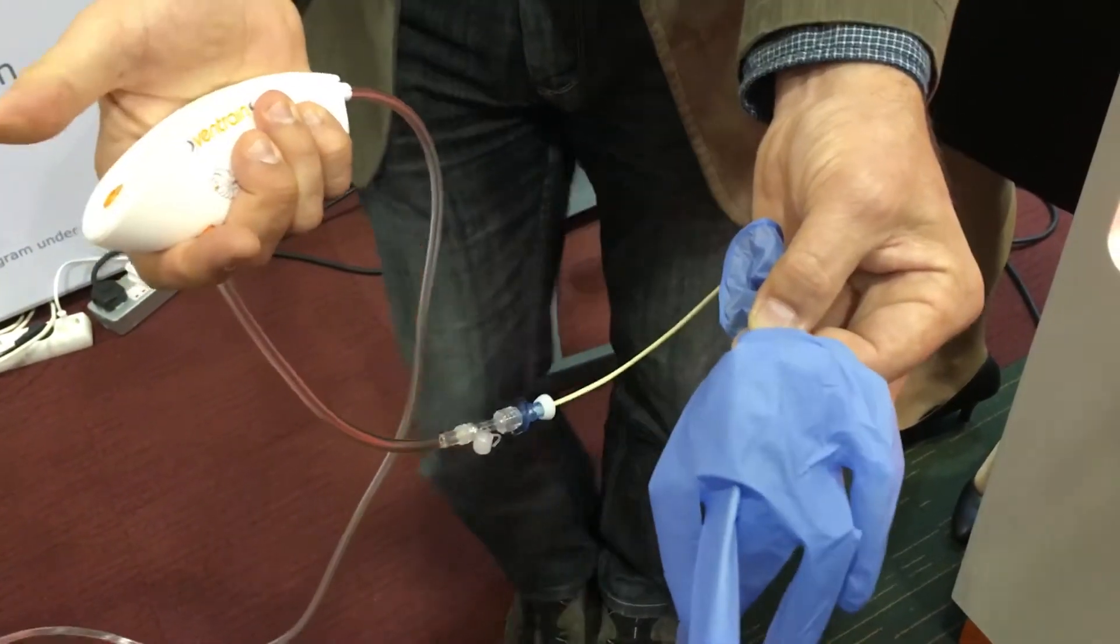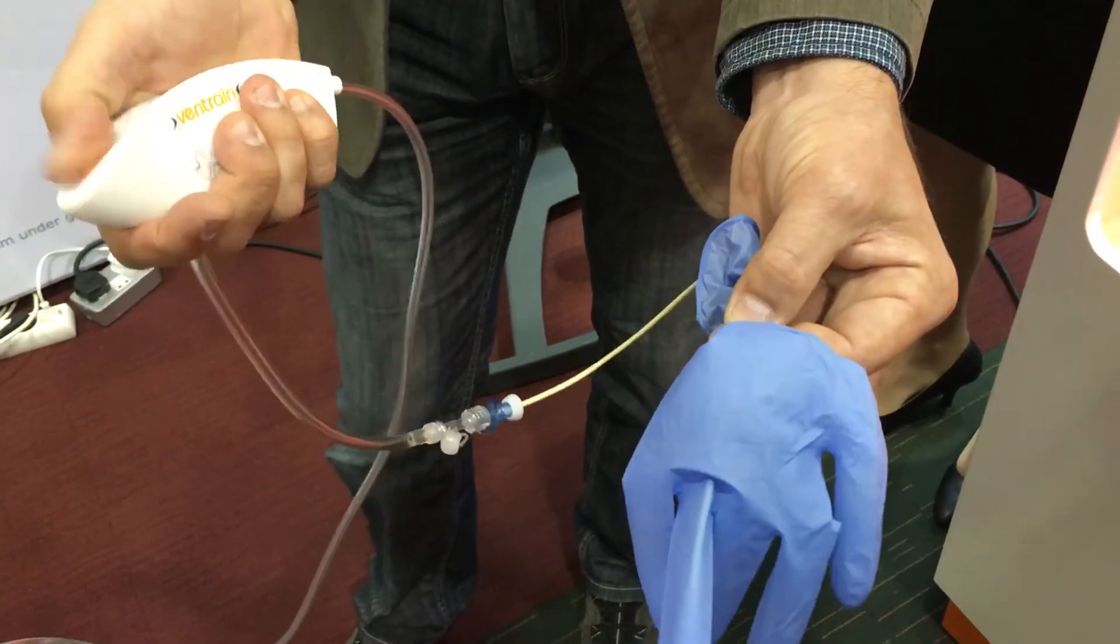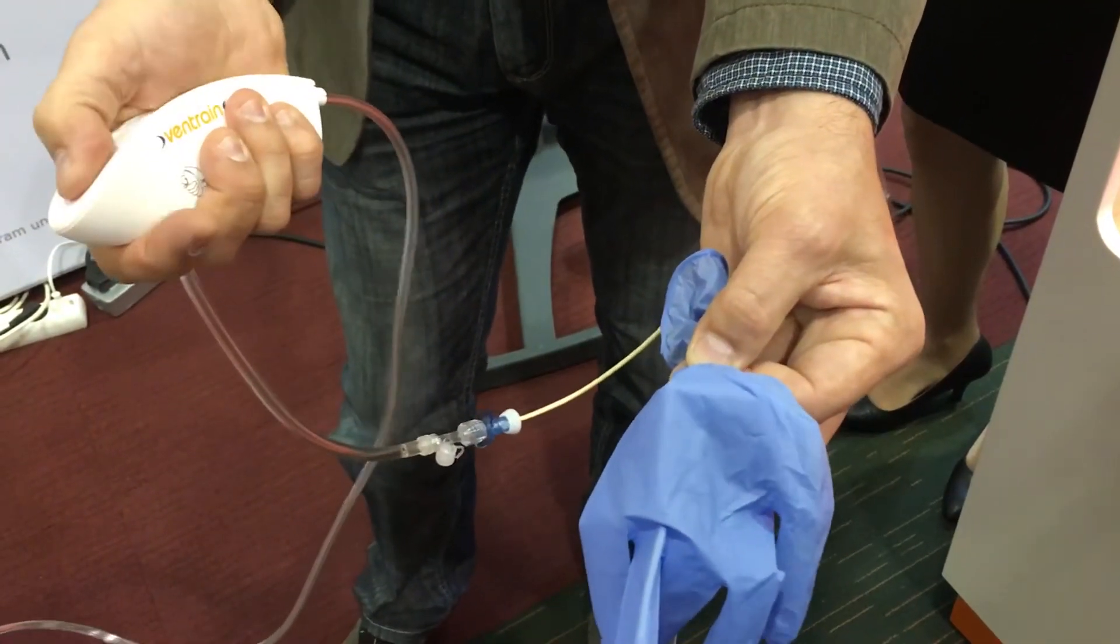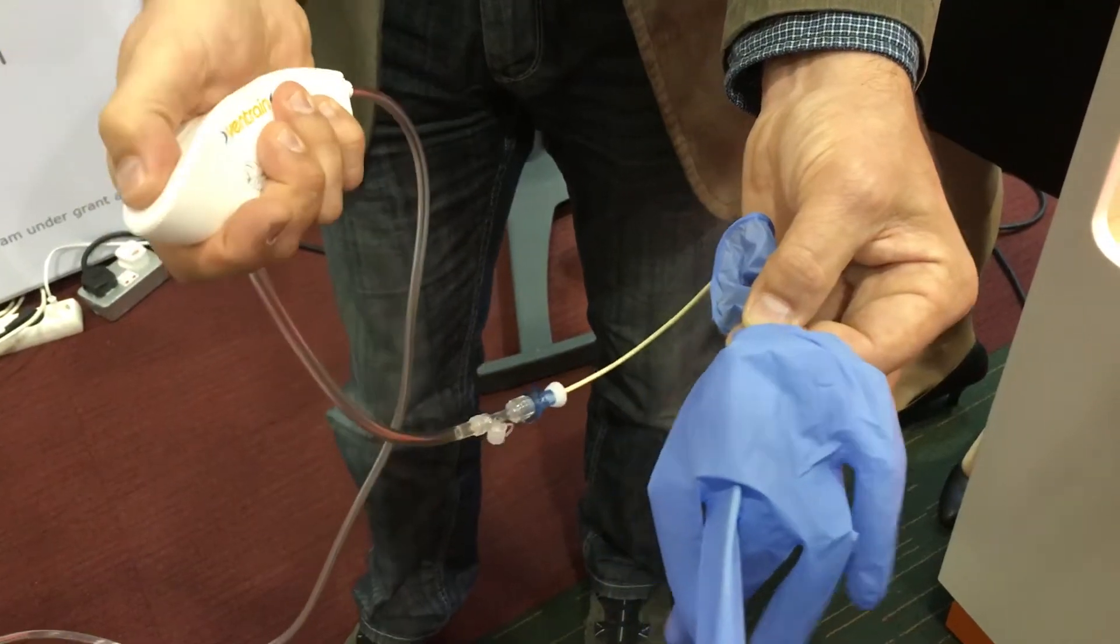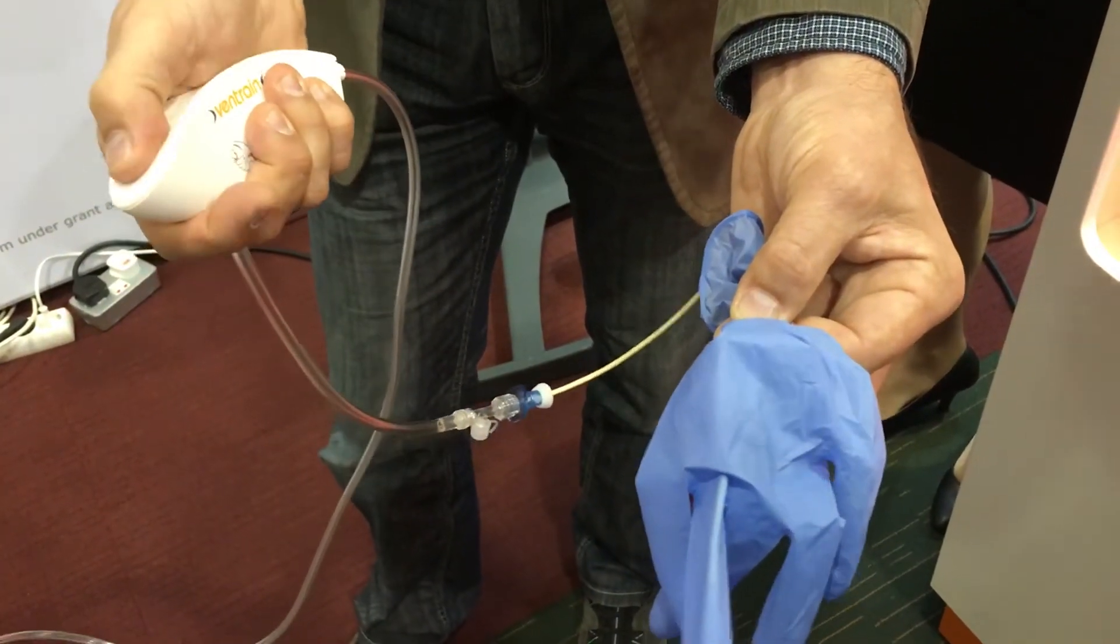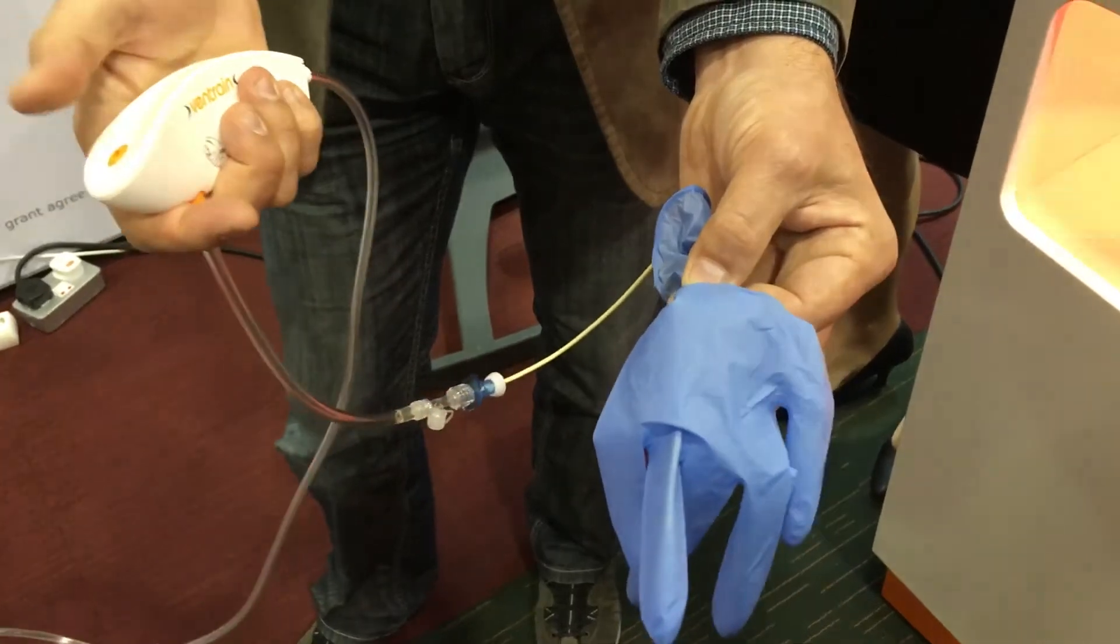For example, I've now set the flow to 6 liters. That means, if I redirect the flow for one second to the patient, it means insufflation of 100 cc, okay?